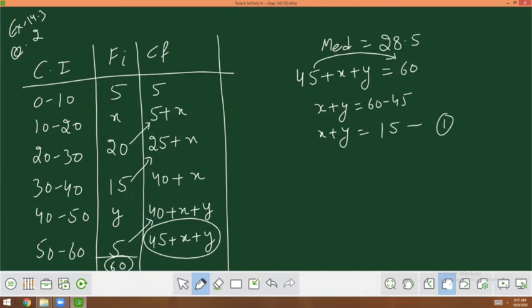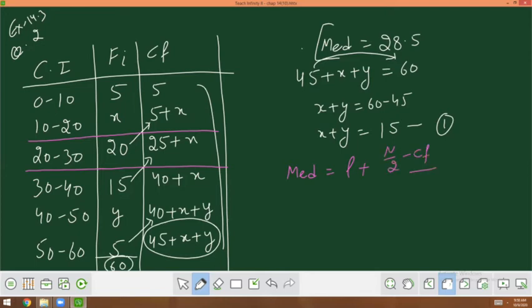Secondly, we put the median formula. n by 2 is 60 by 2 that is 30. 30 lies in which interval? The median class is the interval where the median lies. Median lies in the 20 to 30 interval. The answer is 28.5, so 20 to 30 interval. The median formula is L plus n by 2 minus cf over f into h. Clear?